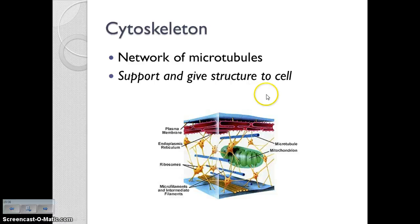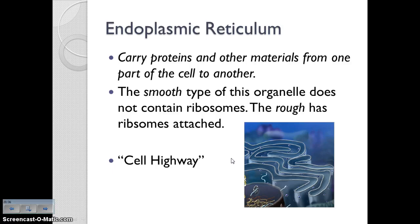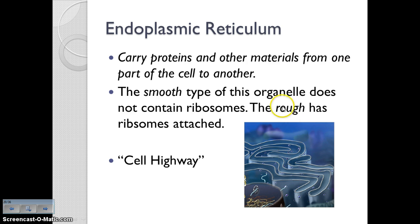Next up we have the cytoskeleton, which is a network of microtubules that provide support and structure to the cell — just like your skeleton in your body gives you support and structure. This is going to be found in all cells. Next we have the endoplasmic reticulum, the cell highway. The function of the ER is to carry proteins and other materials from one part of the cell to another, just like a highway does. The ER can be smooth or rough depending on whether or not it has ribosomes attached to it. With ribosomes attached it's rough ER; without them it's smooth ER.